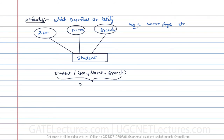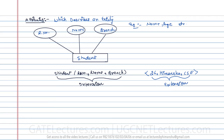When we represent the student entity with attributes like roll number, name, and branch — without exact values — that is called intension. But if we give exact values like roll number 26, name Himanshu, and branch Computer Science, that particular instance is called extension.